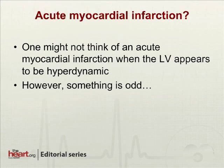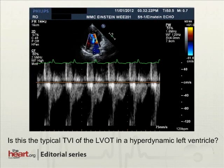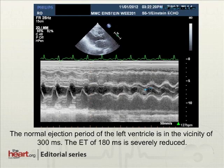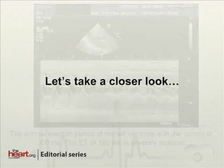Acute myocardial infarction. When first learning to look at echocardiograms, one might not think of an acute MI as causing the left ventricle to appear hyperdynamic. However, there's something odd here. Look again at the left ventricular outflow tract time-velocity integral — is this what one would expect with a ventricle that appears hyperdynamic with an ejection fraction greater than 75%? No, it's not. Typically the velocity should be higher and the width of the jet should be wider. If we time the ejection period on the M-mode of the aortic valve, it measures 180 milliseconds. A typical ejection period in a healthy left ventricle is closer to 300 milliseconds.